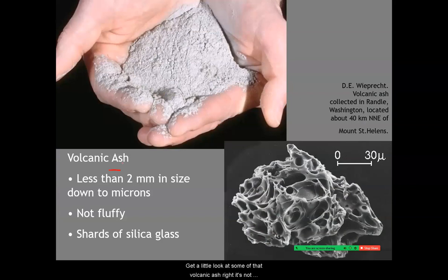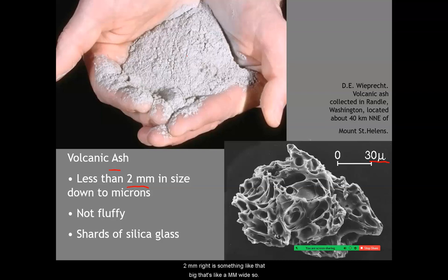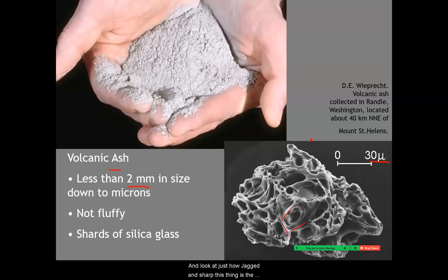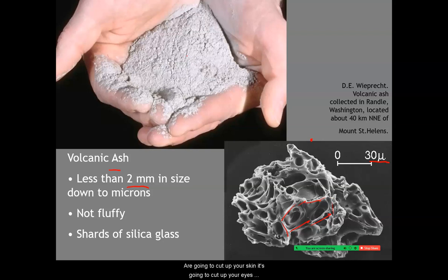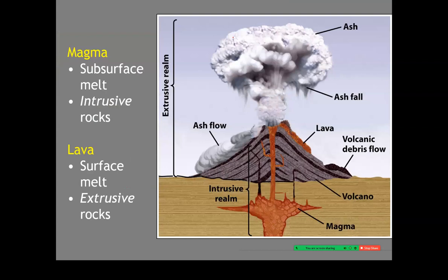Let's get a closer look at volcanic ash. It's not a rock because it's not all combined into one aggregated solid. The pieces are less than two millimeters in size, down to microns — this example is 30 microns, and there are a thousand microns in each millimeter, so you could fit 50 of these grains across a single millimeter dot. Look at just how jagged and sharp this thing is. These shards of silicate material are going to cut up your skin, your eyes, and your lungs if you inhale it. It's kind of like holding fiberglass.